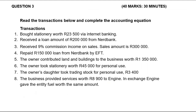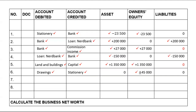Transaction seven: the owner's daughter took trading stock for personal use. Even though the owner's daughter took it, we don't know who the daughter is — the only person we know is the owner. If the daughter takes trading stock, they are taking it on behalf of their parent who is the owner, meaning this trading stock is taken as though it was for the owner's personal use. Anything for the owner's personal use taken from the business is drawings — you debit drawings, you credit whatever the owner took. In this case, credit trading stock. Trading stock is an asset, so the asset will decrease by 3,400. Drawings decrease owner's equity. Liabilities are not affected — they are zero.